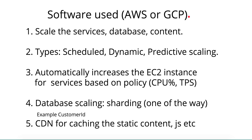Automatically increasing EC2 instances for a service works based on the policy set earlier: when CPU threshold goes beyond 60% or transactions per second exceed a certain limit, add one more EC2 instance to the group. Setting this policy enables automatic scaling of EC2 instances so you can scale accordingly.